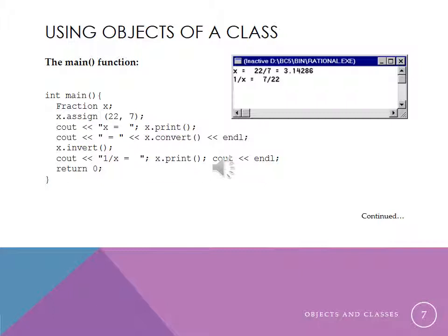But then the next thing we do is actually convert. So the x dot convert method converts the 22 divided by 7 into decimal. Oh, that looks familiar. Maybe we should have called it something other than x, like, oh, let's say pi. And then a little bit later on we invert the fraction, which we wouldn't be doing with pi, and now it's 7 over 22.